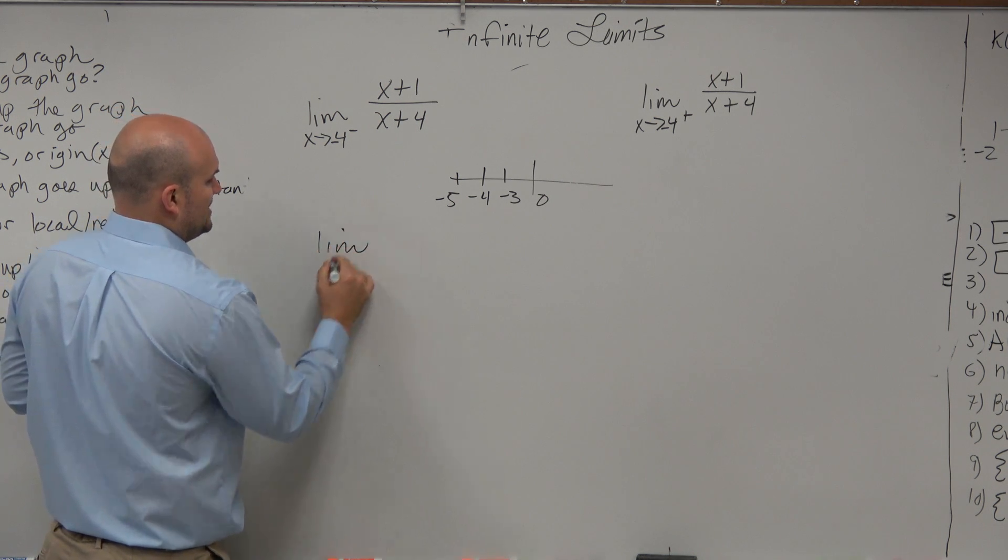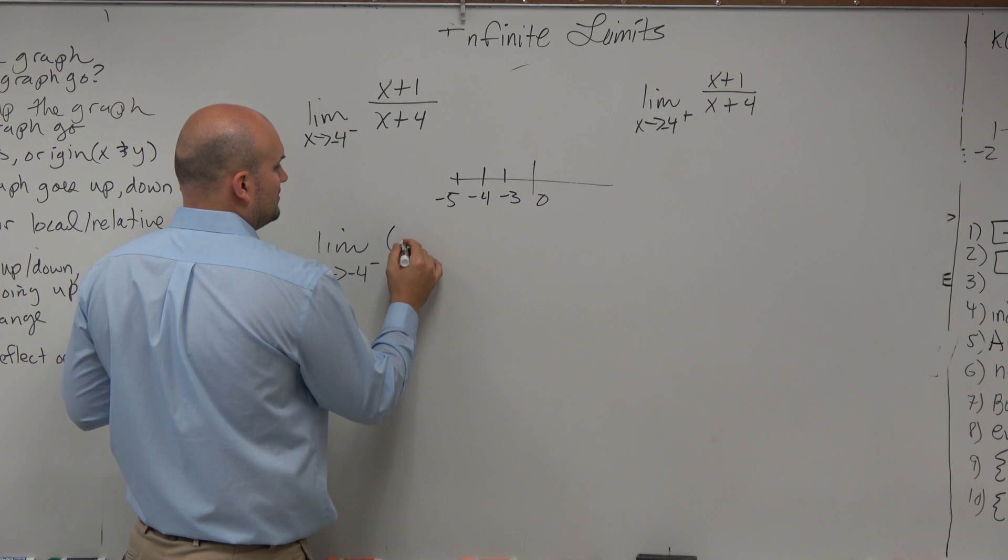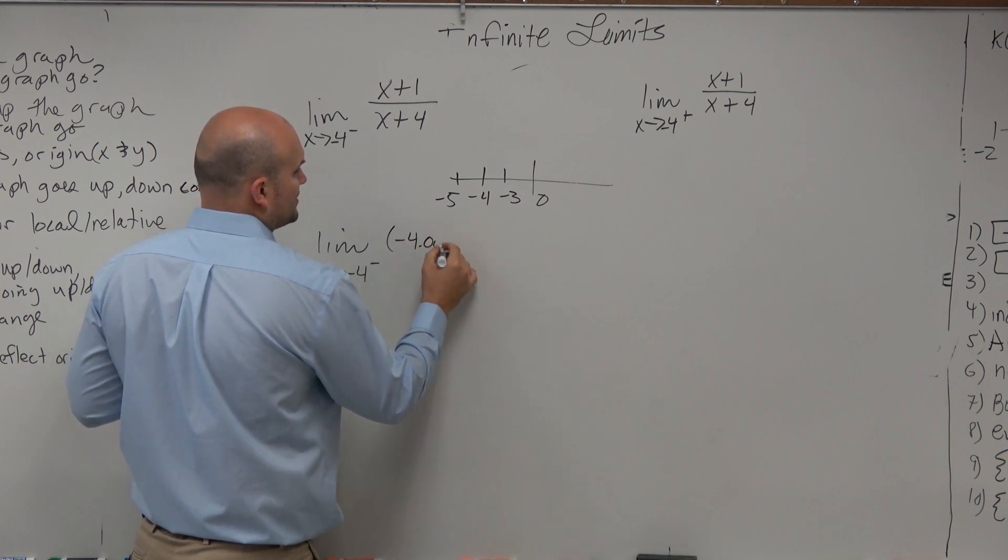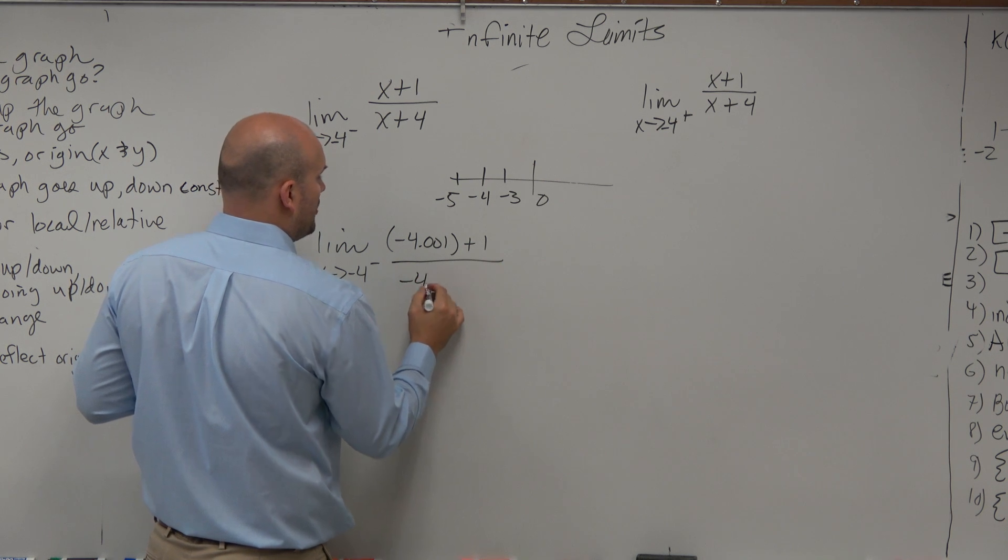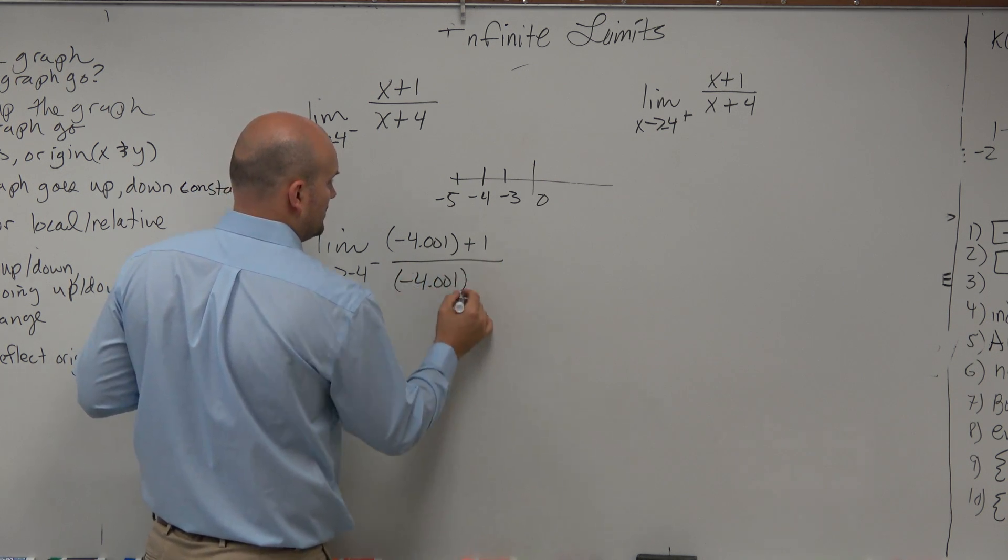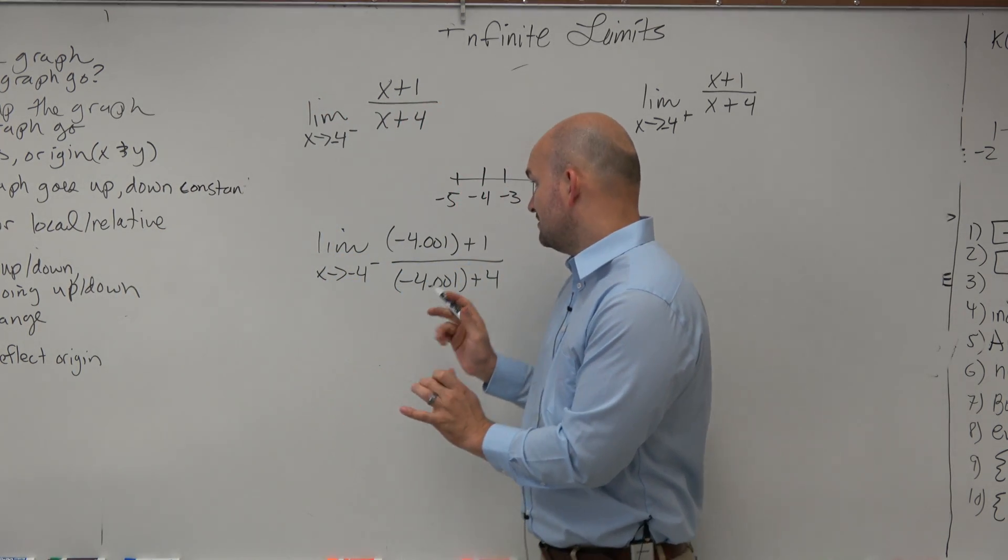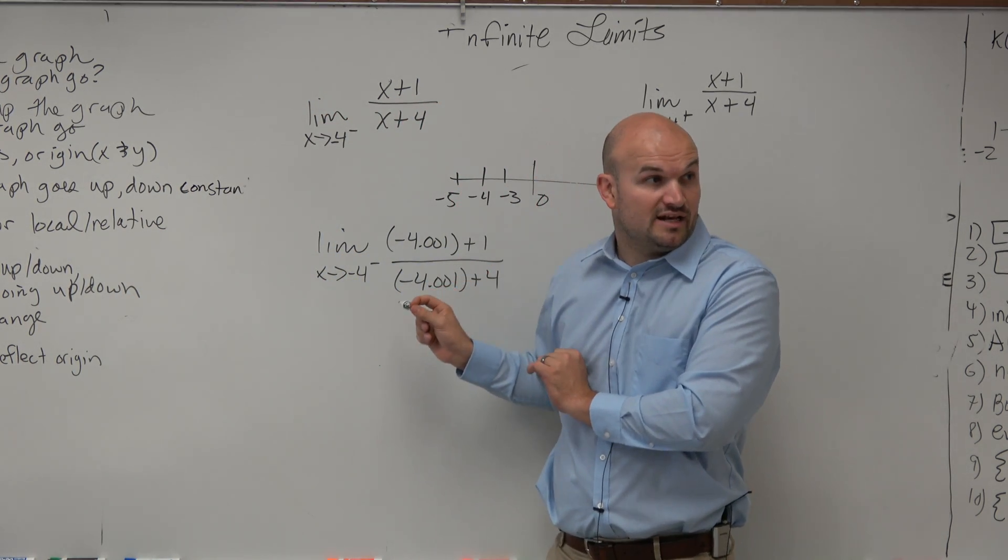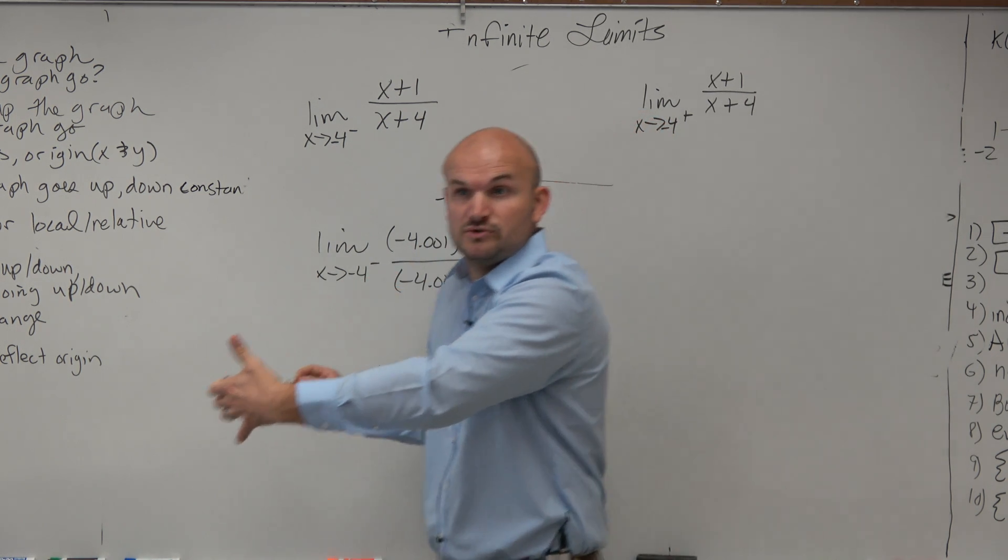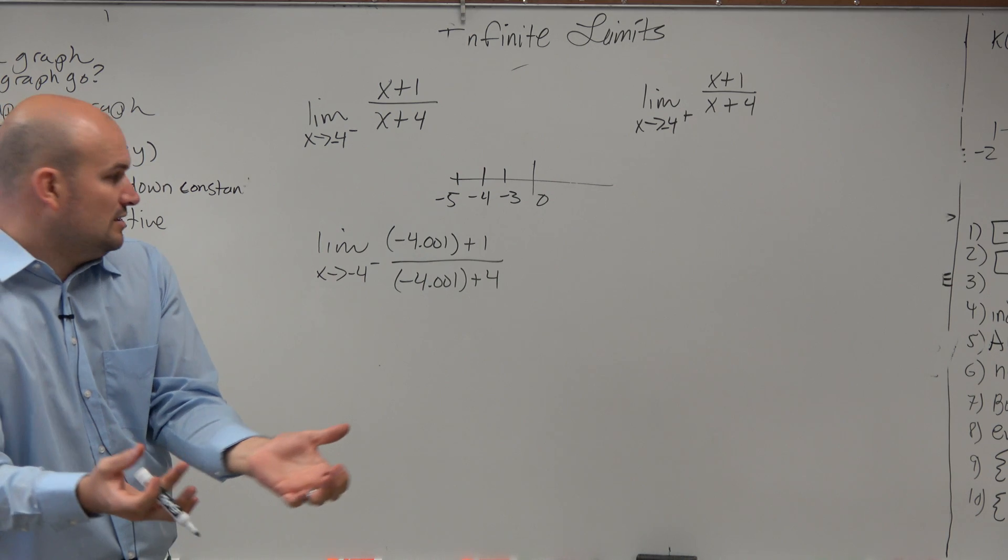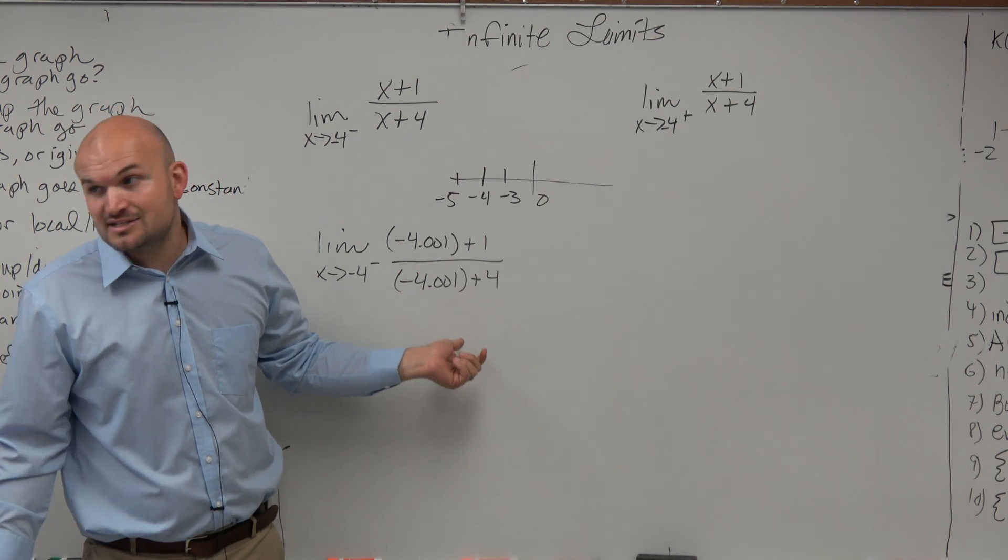So let's do limit as x approaches negative 4 from the left, let's plug in negative 4.001 plus 1 over negative 4.001 plus 4. Now you guys would agree with me that that number is really close to negative 4 from the left-hand side. It's really close to it. It's not negative 4. So the nice thing about this is it doesn't make it undefined. That's the cool thing.